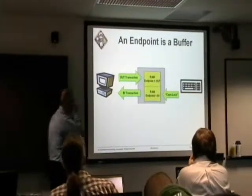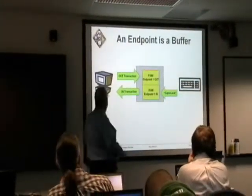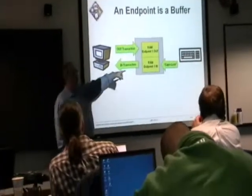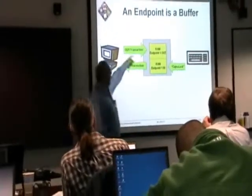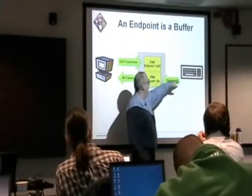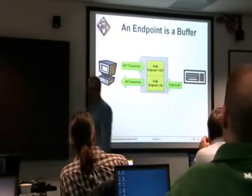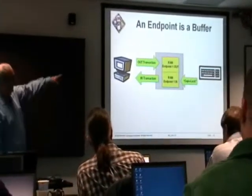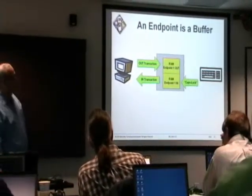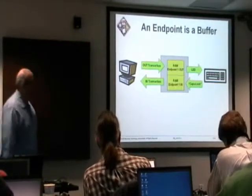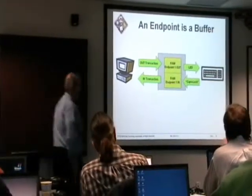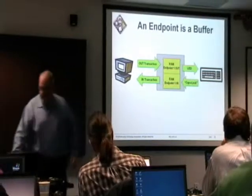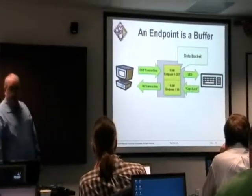That doesn't just stop there, because now the PC has received the fact that somebody hit the caps lock button. It now needs to light the LED on the keyboard to indicate that caps lock is active. So it sends an OUT transaction, which sends an LED write command to the keyboard, which then lights it.